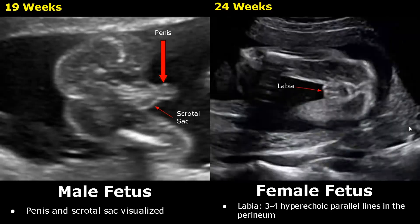At 24 weeks, the appearance of the labia is even more clear. We can see the hyperechoic parallel lines very clearly. Determining the gender becomes easier as the fetus grows.